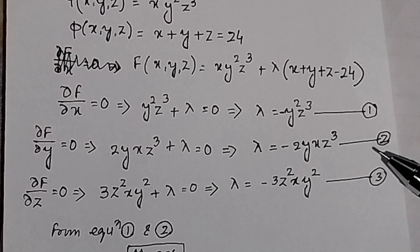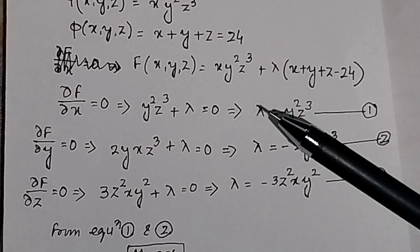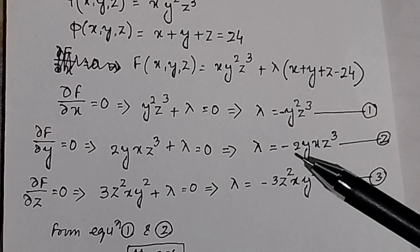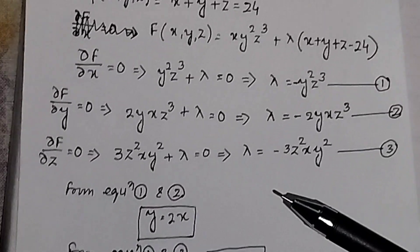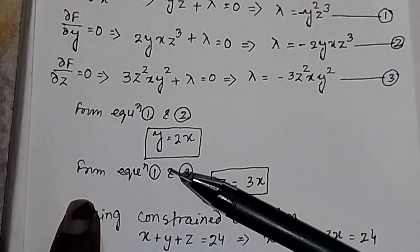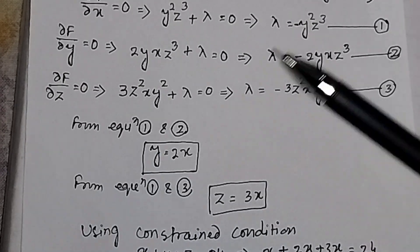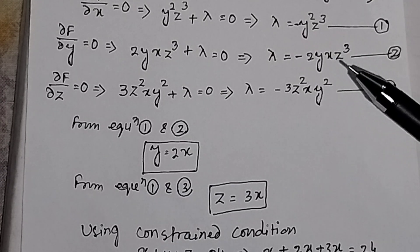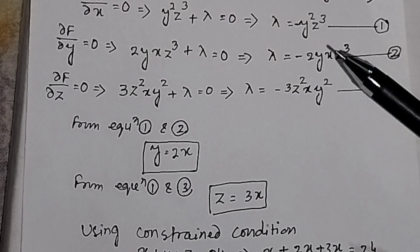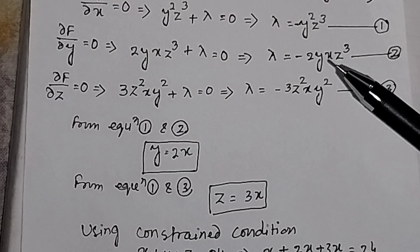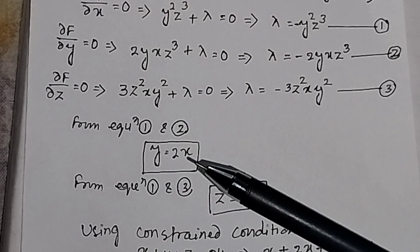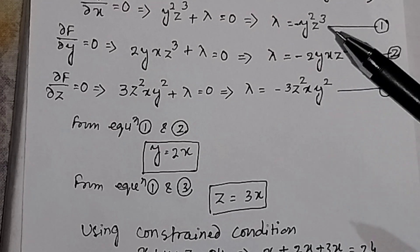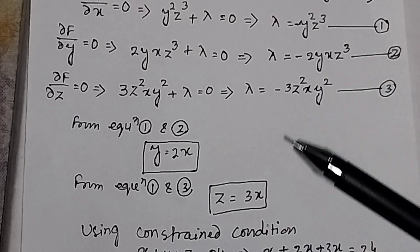From equations 1 and 2, since the left-hand sides are equal: −y²·z³ = −2xy·z³, which gives y = 2x. From equations 1 and 3: −y²·z³ = −3x·y²·z², which gives z = 3x.